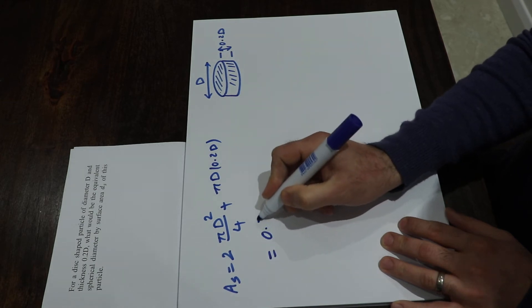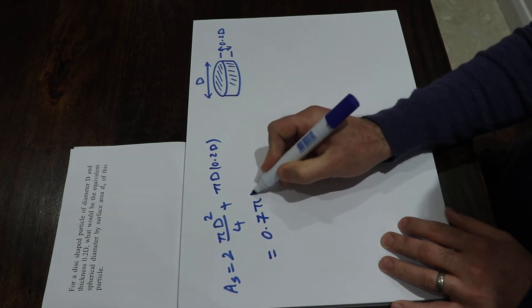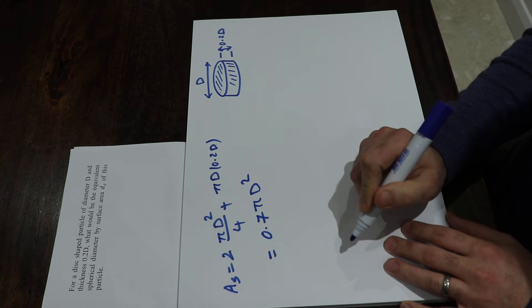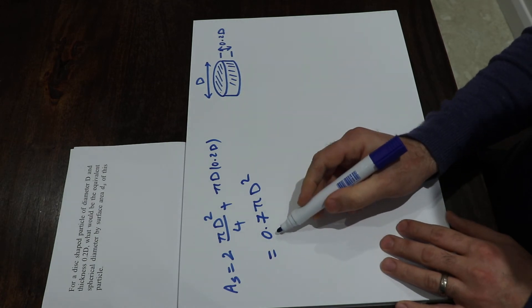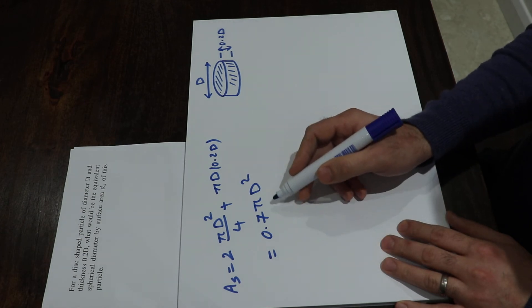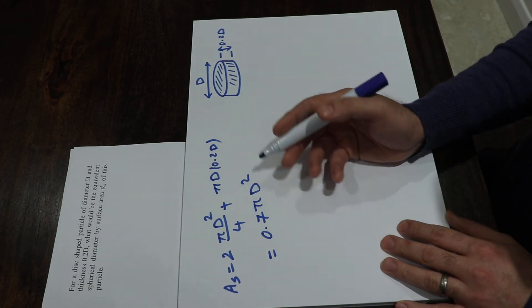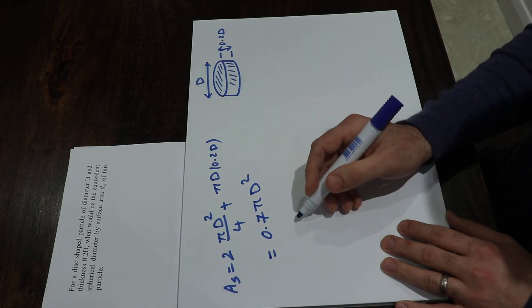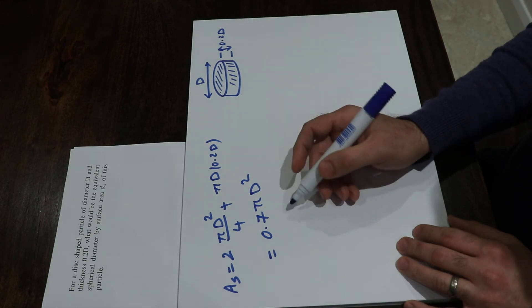And this will be equal to 0.7 pi d squared. And so if you equate this surface area by the surface area of the sphere, then you can calculate the equivalent spherical diameter.